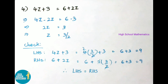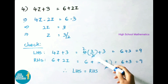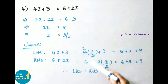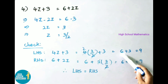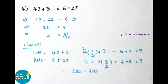Check: LHS is 4Z + 3 = 4 × (3/2) + 3 = 6 + 3 = 9. RHS is 6 + 2Z = 6 + 2 × (3/2); here 2 and 2 cancel, giving 6 + 3 = 9. LHS and RHS are the same. Therefore LHS = RHS.